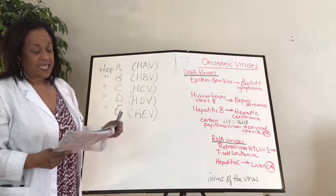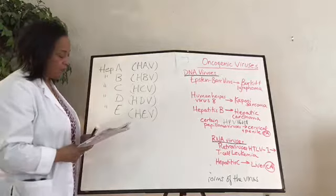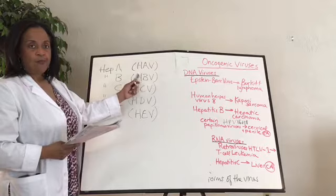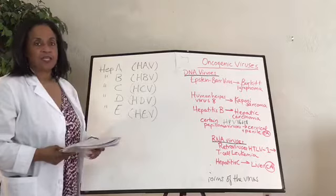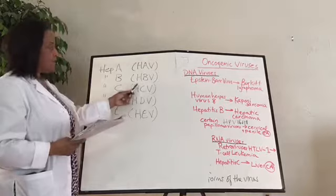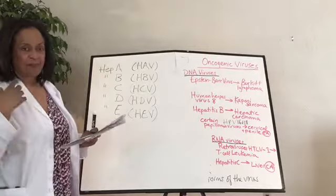Hepatitis B has a reverse transcriptase and uses an RNA-dependent DNA polymerase to replicate. Fortunately, there is a vaccine for Hepatitis B — get it on general principle. It can cause cirrhosis and lead to liver cancer.